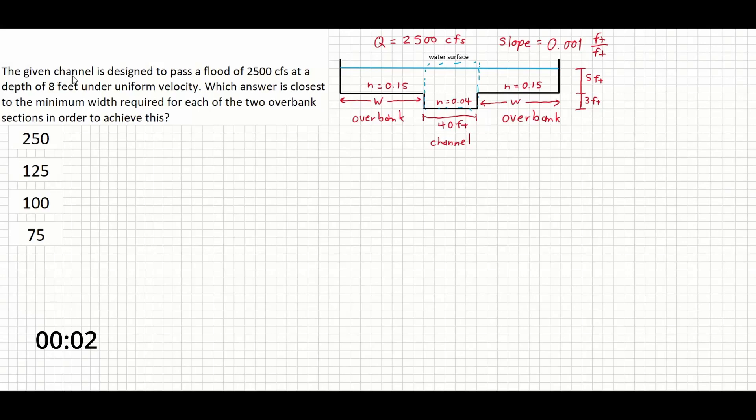The given channel is designed to pass a flood of 2,500 CFS at a depth of 8 feet under uniform velocity. Which answer is closest to the minimum required width for each of the two overbank sections in order to achieve this?